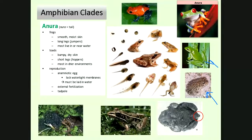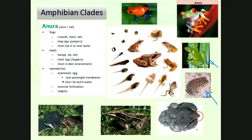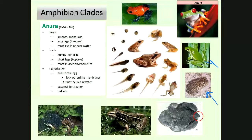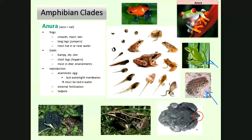Regarding reproduction: those two frogs on the left are engaged in what we call amplexus — basically the frogs mating. The female spawns her eggs and fertilization is external; the male clasping her releases sperm and fertilization occurs in the water. This is broadcast spawning — everything goes out into the water. The eggs have to stay in the water, as they are anamniotic eggs that will dry out if laid on land.